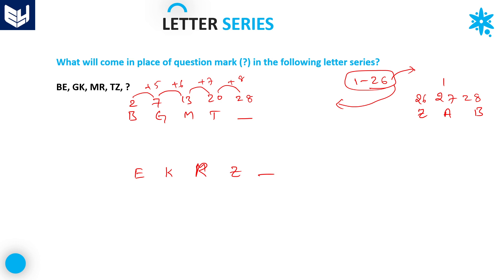Whenever a number is greater than 26, subtract 26 from that number. 28 minus 26 equals 2, and 2 corresponds to the letter B. You can keep this rule in mind: for every cycle of 26 letters, the pattern repeats. In exams, you may go up to two cycles — that is, from 27 to 52. So the first letter of the answer is B. Now write down the second letters with their position numbers: 5, 11, 18, 26.